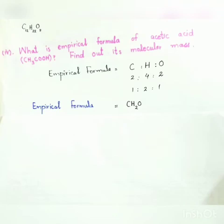Looking at the formula CH3COOH: carbon has two atoms, hydrogen has four atoms, and oxygen has two atoms. So the ratio is 2:4:2. When we simplify by dividing by the least number, which is 2, we get 1:2:1. So carbon has one atom, hydrogen has two atoms, and oxygen has one atom. Therefore, the empirical formula is CH2O.